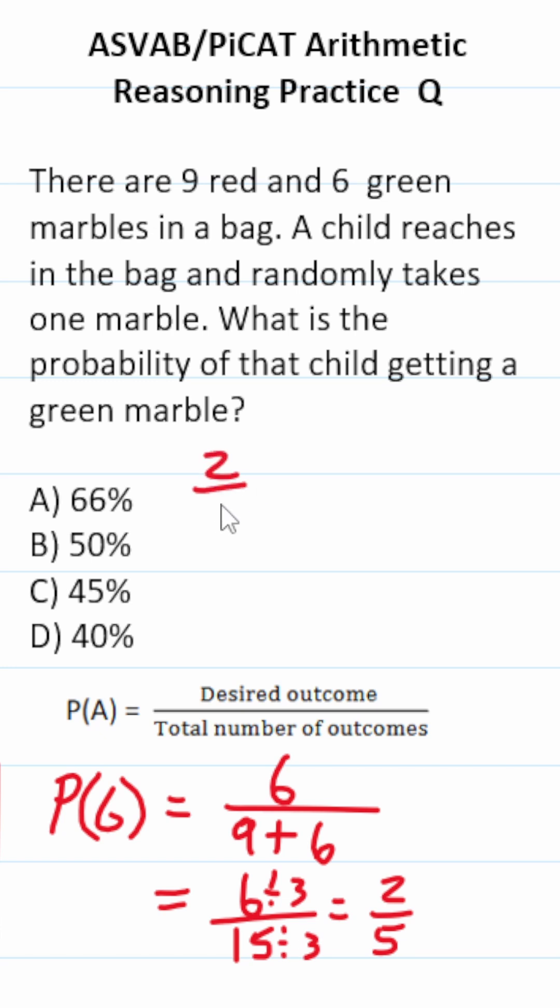What is two fifths as a percent? Think about it this way: multiply this by 2 and this by 2. This becomes 4 over 10. 4 over 10 is 0.4 or 40 percent. So this one is D, 40 percent.